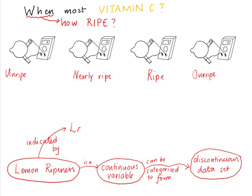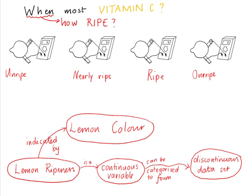It's also interesting to note that he used color as an indicator of ripeness, because there may not be an instrument you can place on a lemon to measure ripeness directly. So he assumed that the color of the lemon is linked to its ripeness and categorized lemons accordingly: green means unripe, yellow-green means nearly ripe, yellow means ripe, and those turning a bit black are overripe.